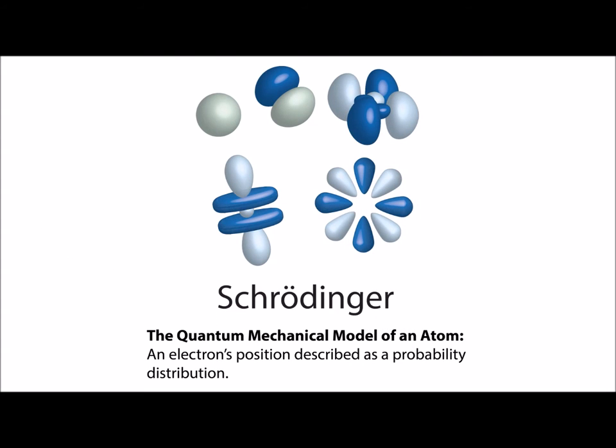Erwin Schrödinger refined Bohr's model using mathematical equations to predict an electron's probability of being in a certain position at a given time. The space described by an electron's probability distribution is now known as an orbital.